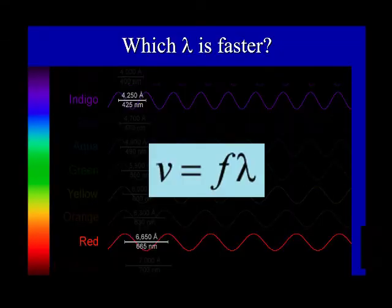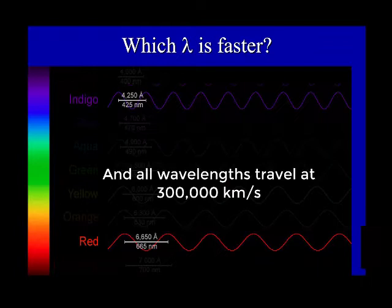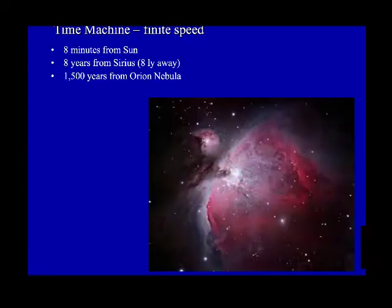Using the wave equation, which wavelength of light — red or blue — is the fastest? The answer is neither. All wavelengths of light, regardless of the color, are the same speed. The speed raises a hard-to-fathom fact about light.